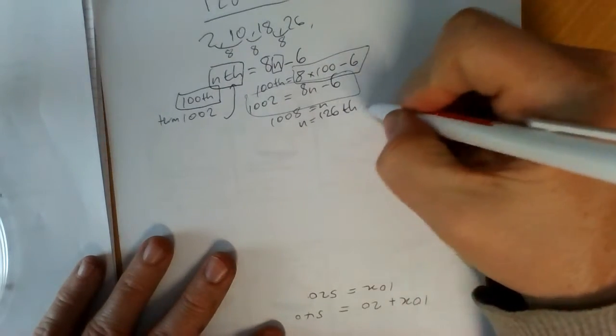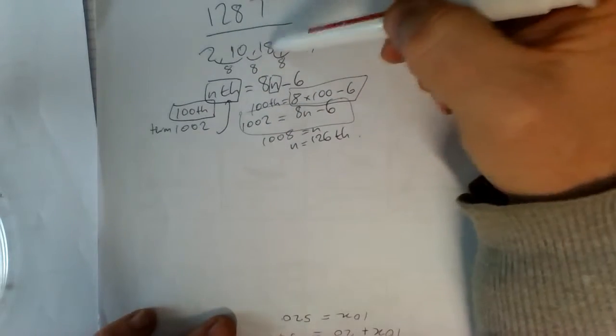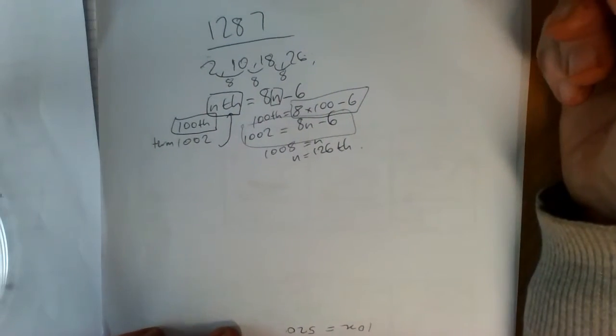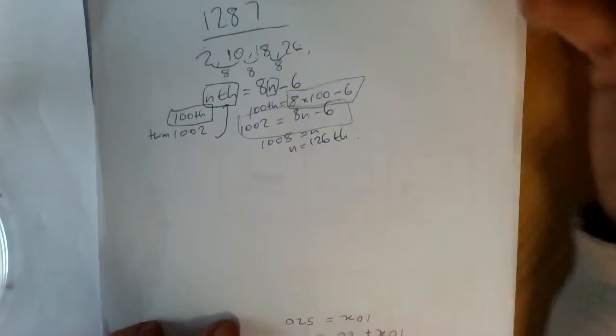That tells you that it's the 126th. So 1st, 2nd, 3rd, 4th are the positions: 2, 10, 18 and 26 are the actual terms.